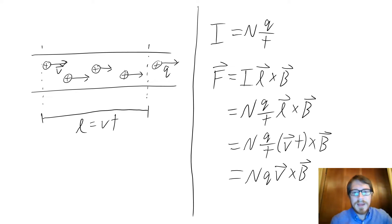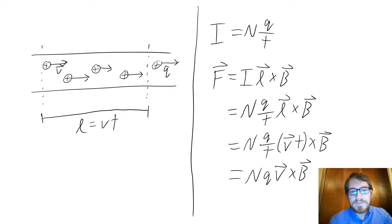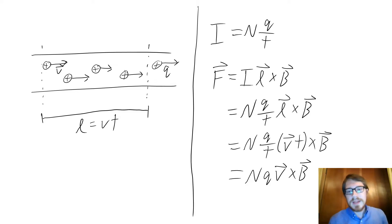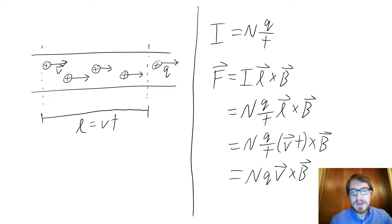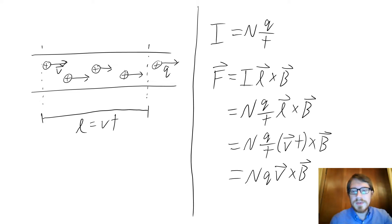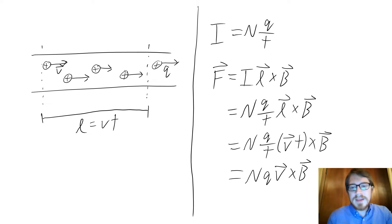You can think of a current in a wire as a collection of electric charges all moving in roughly the same direction in a DC current. Let's define N charges moving at a roughly similar speed V, which means they travel a distance L in a time T. We can define current as the number of charges N that move this distance, times the charge of one of them — usually the charge of an electron — divided by the time it takes to move that distance.